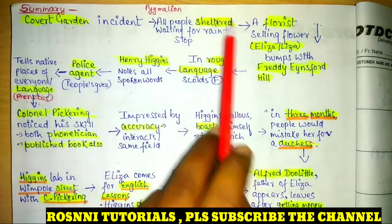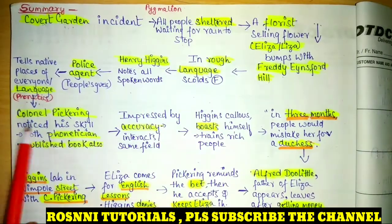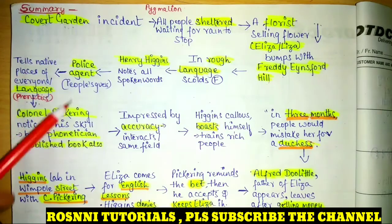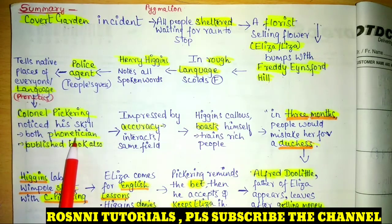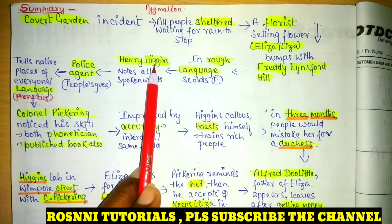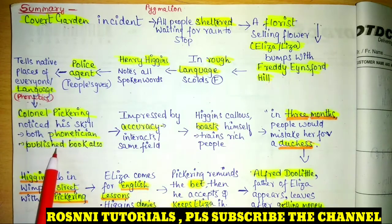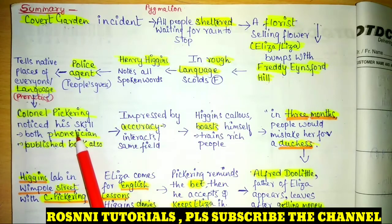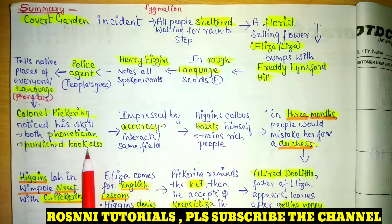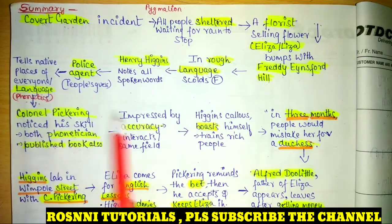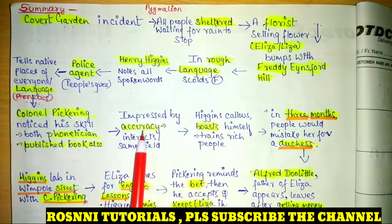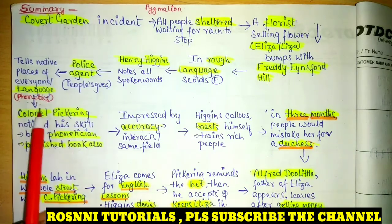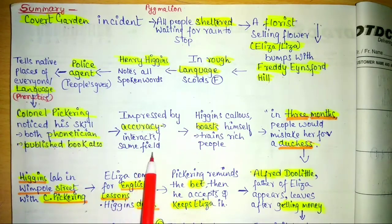There was another man witnessing all this on that rainy day — his name was Colonel Pickering. He noticed the crowd gathering around Higgins and how Higgins was able to identify people's locations. Pickering himself was also a phonetician. After conversing with Henry Higgins, he found that both of them were phoneticians who had published books and had even read each other's books, though they had not known each other before.